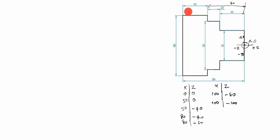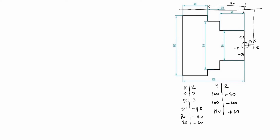Now, what we will do — the tool comes outside. So X we will write as 110, and Z we will write as plus 10 or plus 20, whatever it is — I will write plus 10. Now the tool is in this position, and we will write the program.